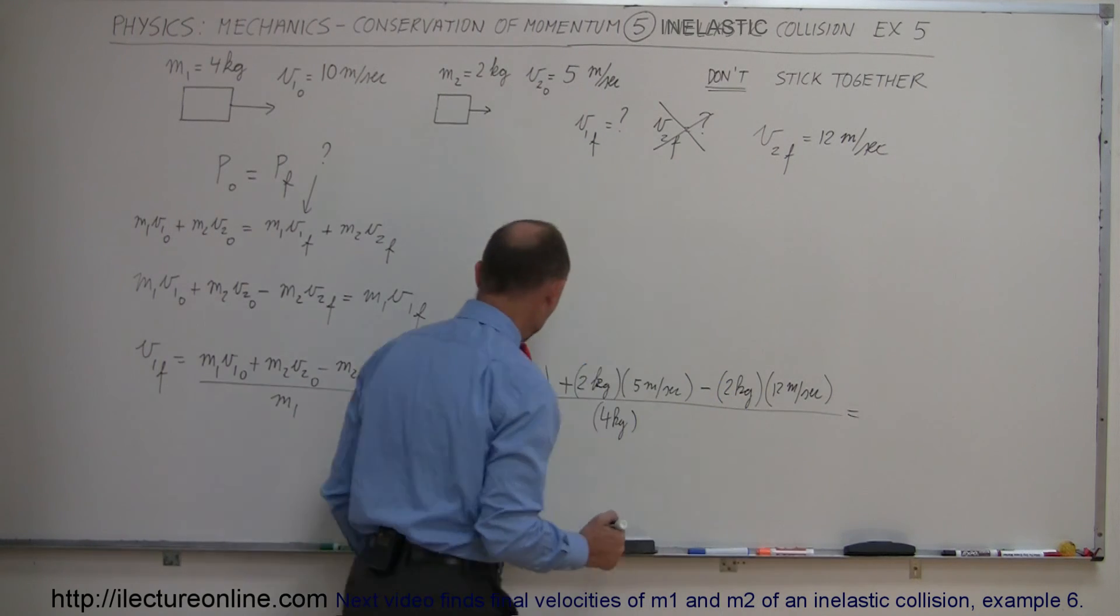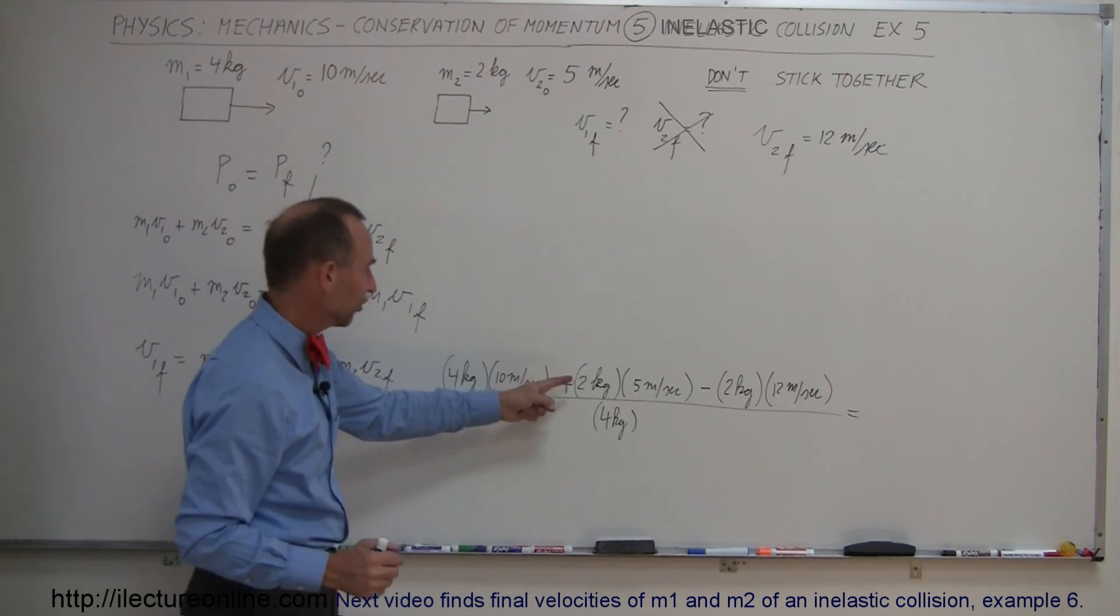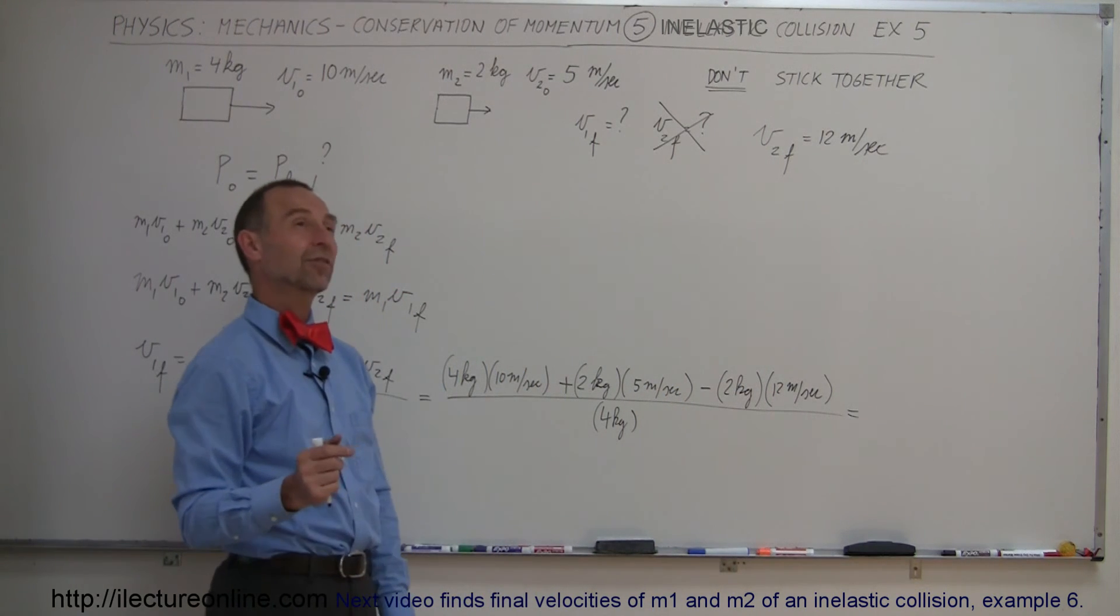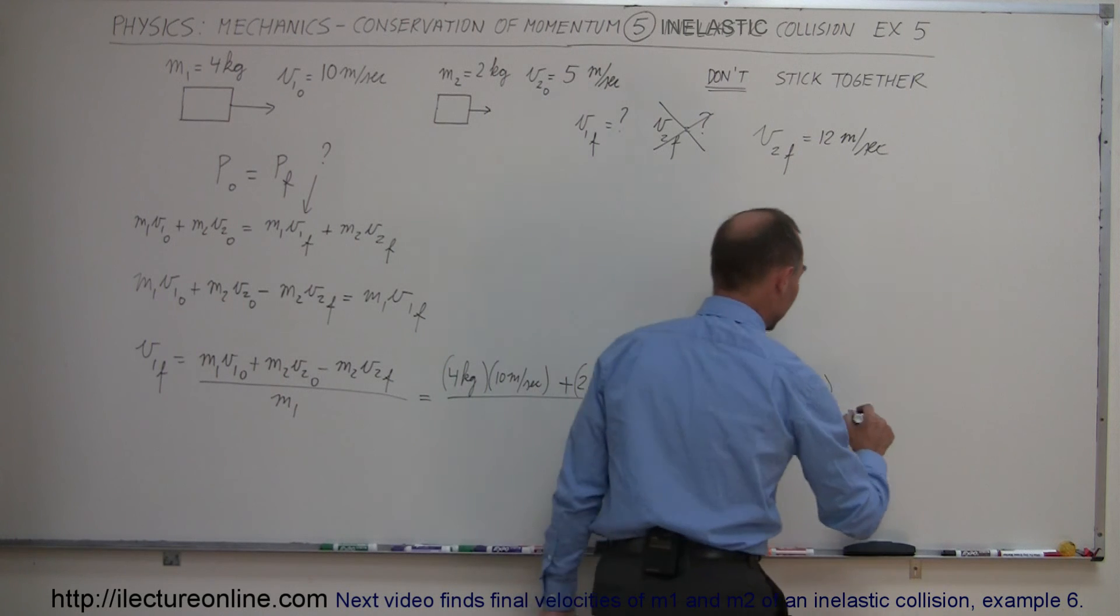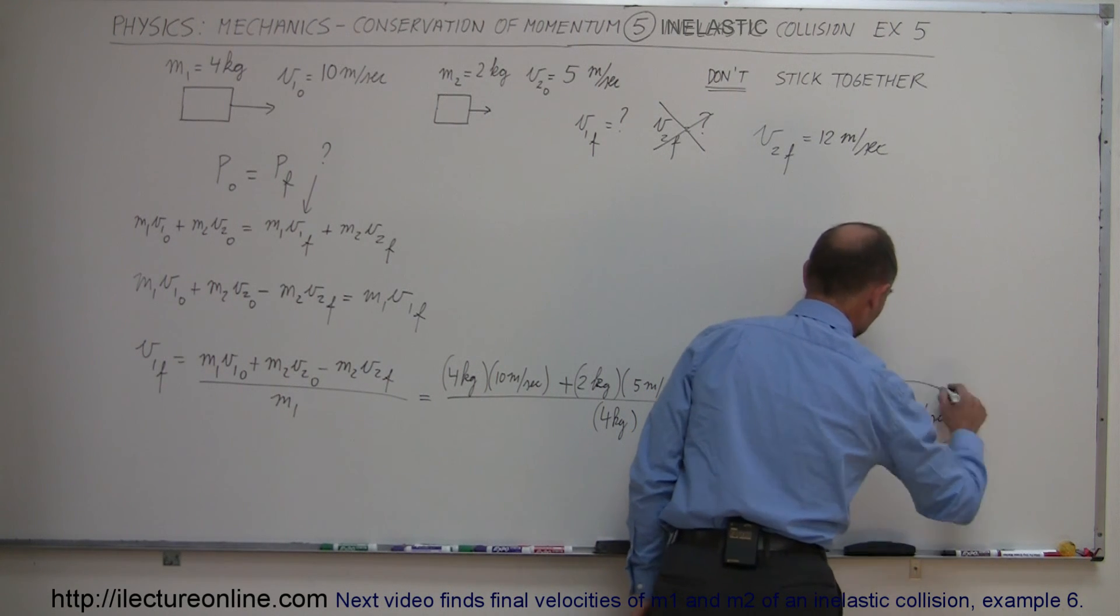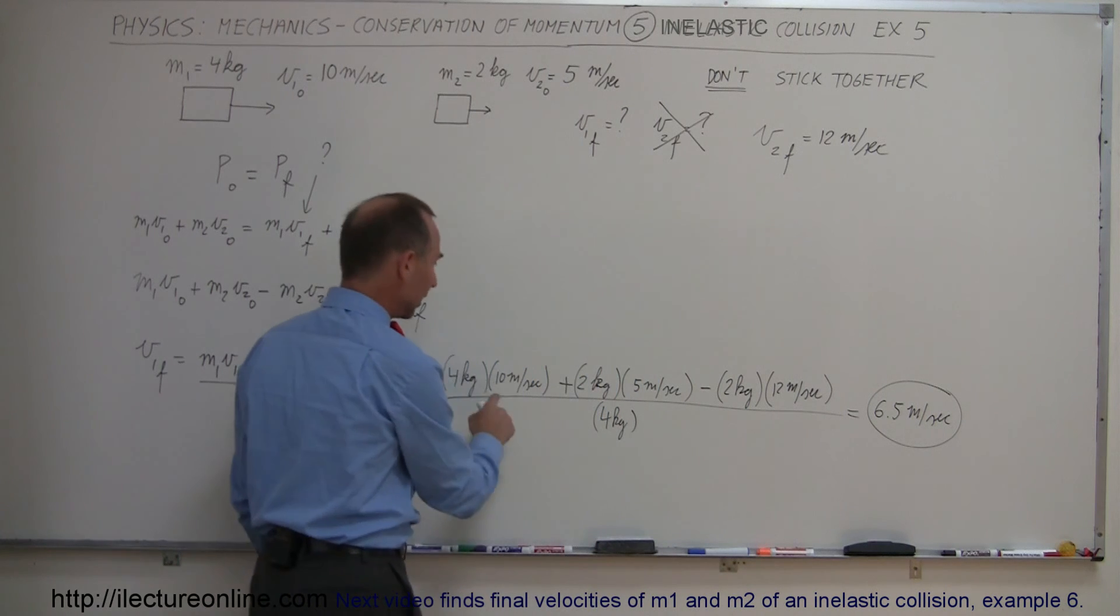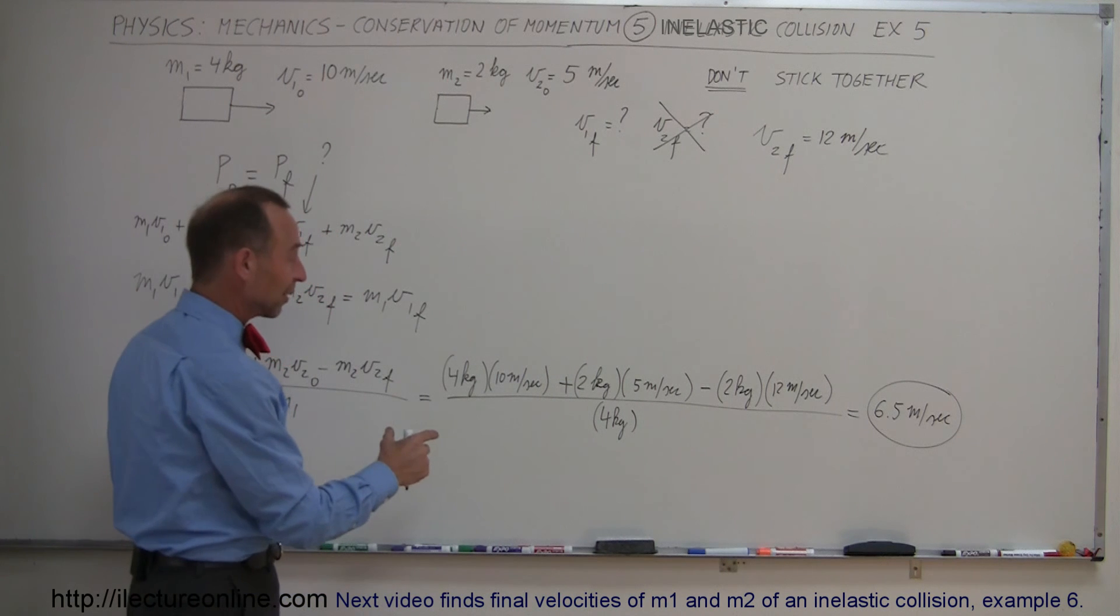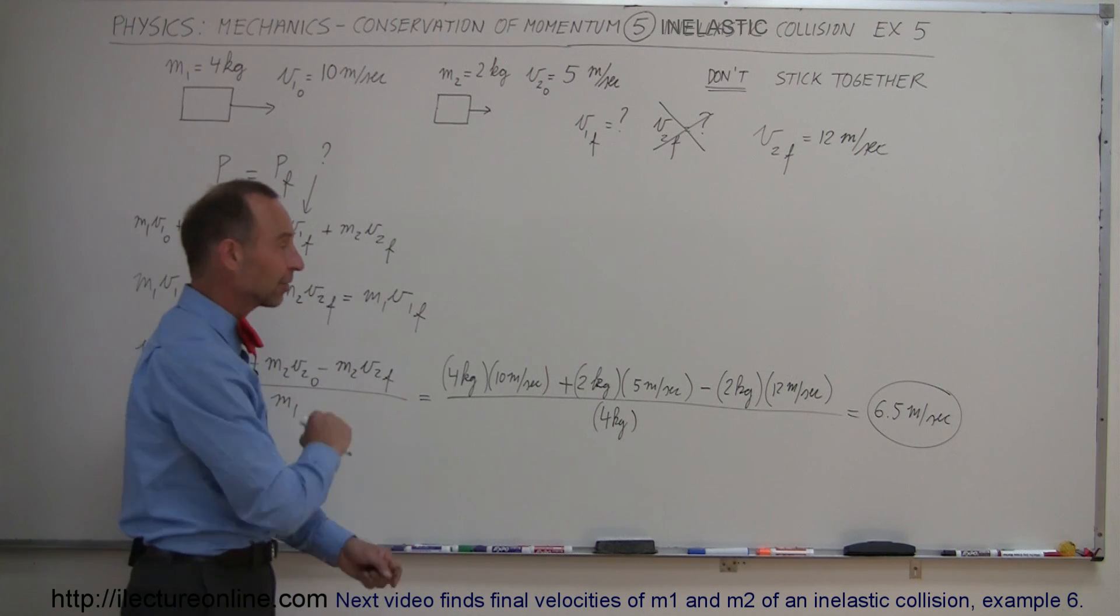So what is that equal to? Here we have 40 plus 10 is 50 minus 24, that is 26 divided by 4. 26 divided by 4 is 6 and a half. So 6.5 meters per second. Let me quickly check that. We have 40, 50 minus 24, 26 divided by 4, 7 times 4 is 28. Yep, that's correct, 6 and a half.